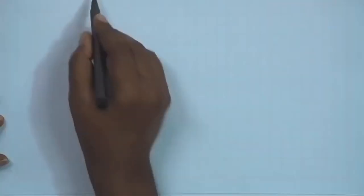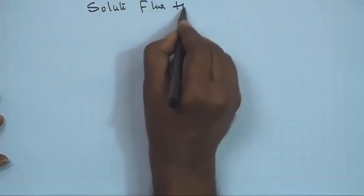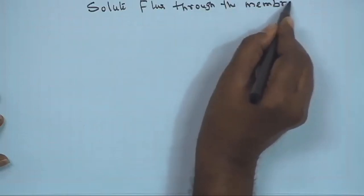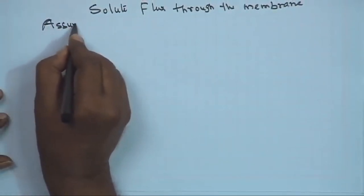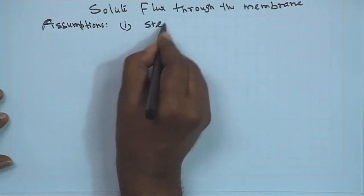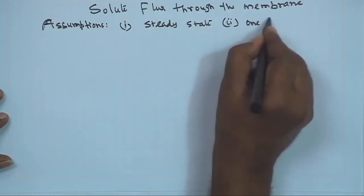Now, the transport flux of the solvent is basically the volumetric permeate flux through the membrane. In this class, we will derive what is the solute flux through the membrane, again starting from the basic equations of irreversible thermodynamics. The assumptions remain the same: it is a steady state system, one dimensional, and no coupling.